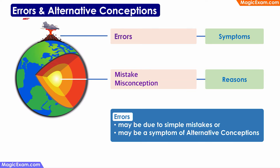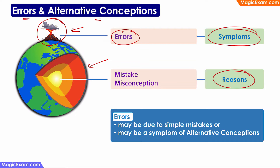Let us now see how errors are connected to alternative conceptions. When we see a volcano, we see hot lava, explosions, and smoke — but the source of those explosions, the lava and smoke, lies deep within the earth, not in the volcano itself. Similarly, when we see errors in something a person is doing or saying, these are just symptoms; the reasons lie deep within the person's mind. Errors can be due to simple mistakes — clerical errors, calculation errors, simple confusion — where the fundamental knowledge is correct. These can be easily corrected by fixing the symptom. Whereas in case of a misconception, the person has an alternative conception, which must first be identified and corrected; otherwise the person will keep repeating the same errors.